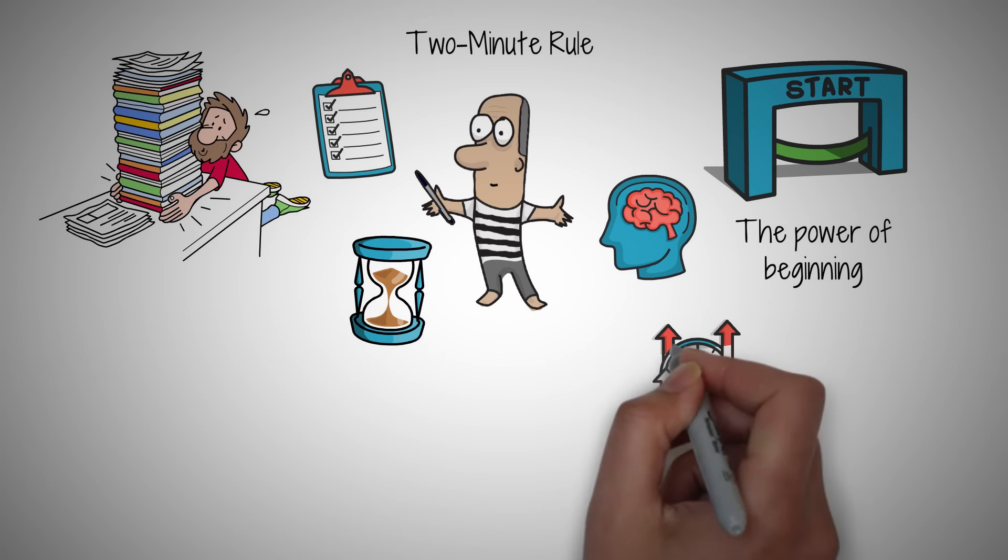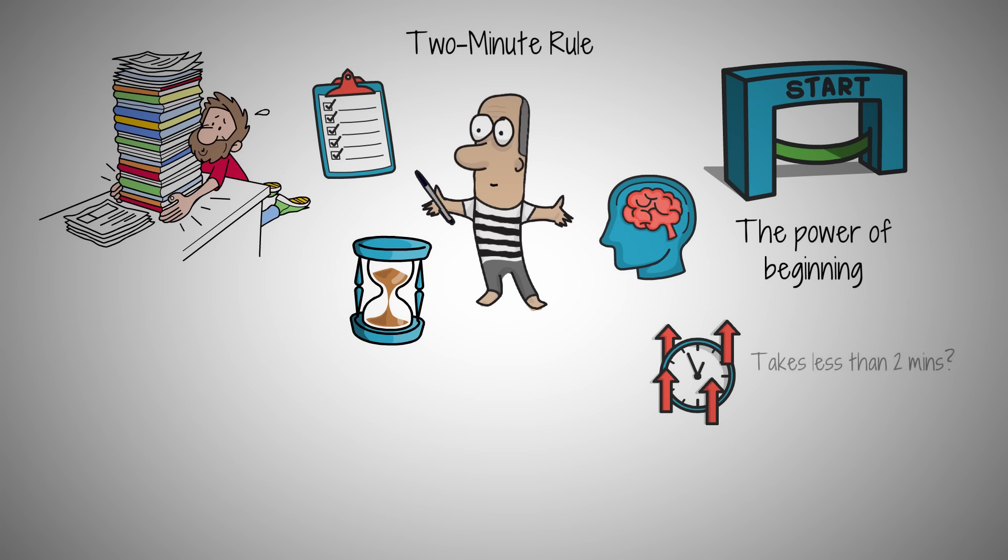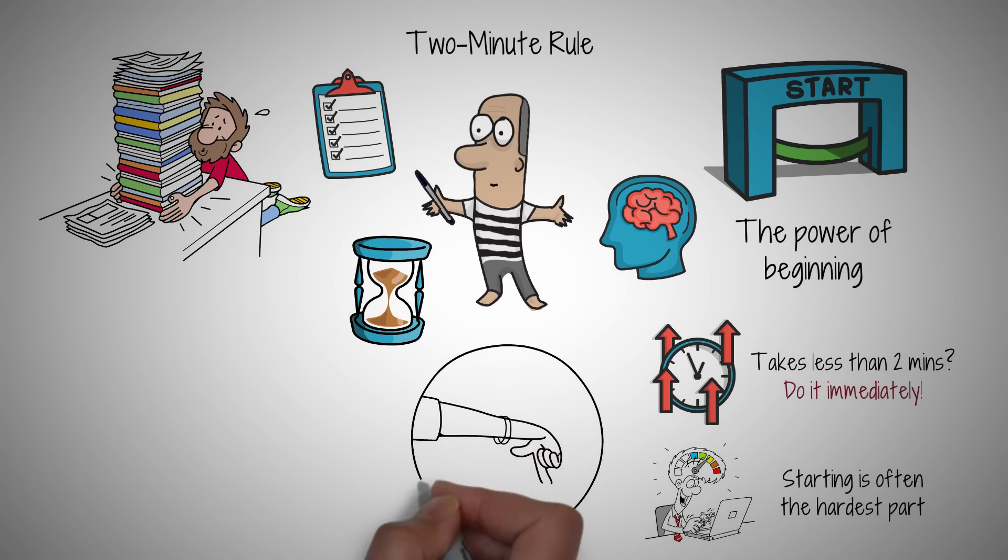The 2-Minute Rule is about tricking our brains to get started on something by committing just 2 minutes to it. If a task takes less than 2 minutes to do, you should do it immediately. This rule leverages the psychology of task initiation. Starting is often the hardest part, and by reducing tasks into 2-minute chunks, we make them less daunting.